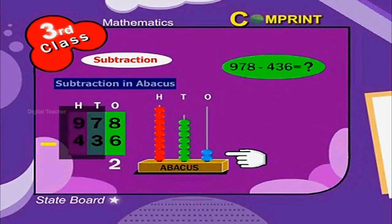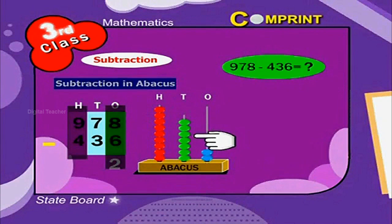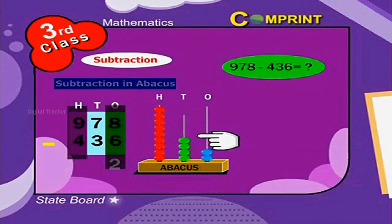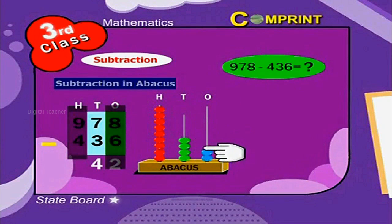Now, let us see the 10's place. Let us remove 3 from 7. 7 minus 3 is equal to 4.